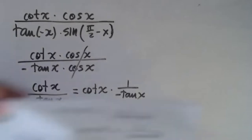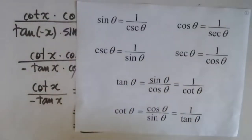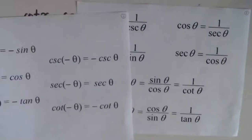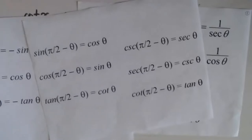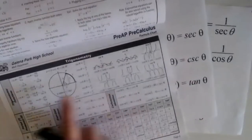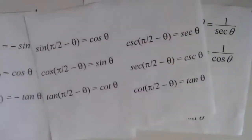Remember, the way through these problems is exactly these identities. The identities you have in your formula book — go to page nine. They are here on page nine. These are exactly what you need.